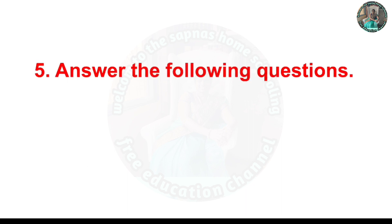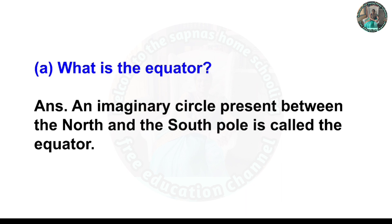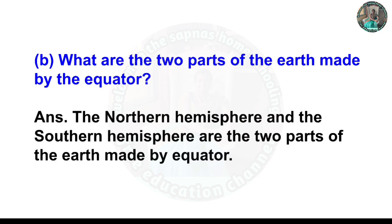Question five: What is the equator? An imaginary circle present between the North and South Pole is called the equator. B) What are the two parts of the Earth made by the equator? The Northern Hemisphere and the Southern Hemisphere are the two parts of the Earth made by the equator.